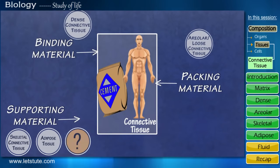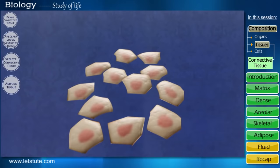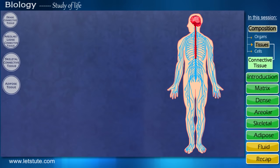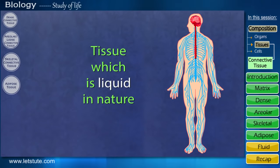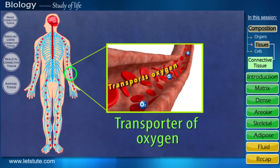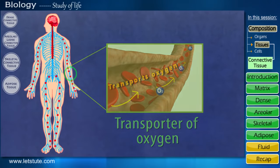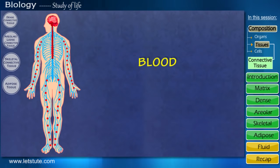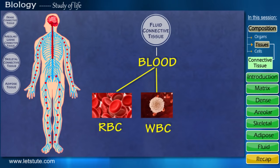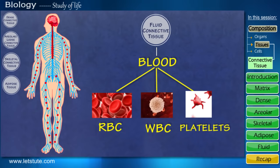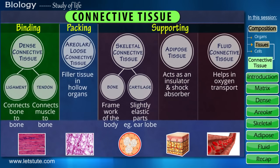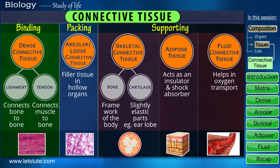This brings us to the last type of connective tissue. What if I tell you that our body has a tissue which is liquid in nature? This fluid flows through your entire body and acts as a transporter of oxygen to all parts of the body. Yes, it's blood. Blood is a fluid connective tissue which has many cells like RBCs, WBCs, and platelets suspended in a liquid medium called plasma. So here we've completed seeing all the types of connective tissue and simultaneously learned the functions of this tissue.